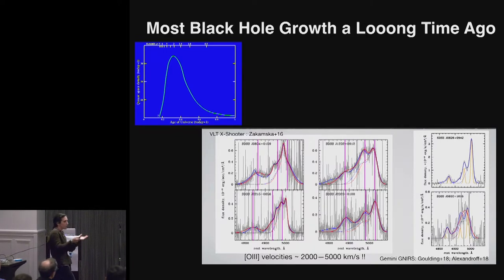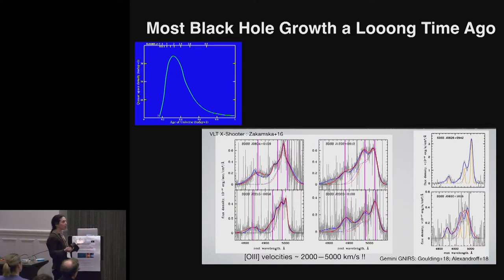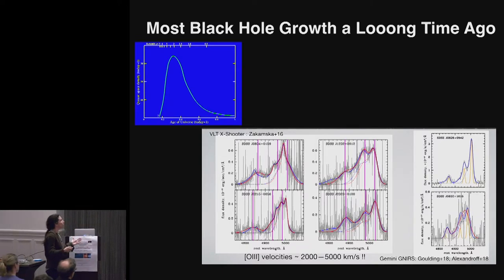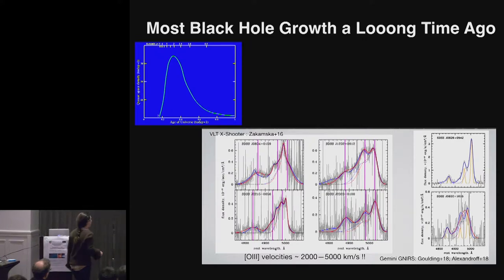These gas lines are moving at 2,000 to 5,000 kilometers per second. For reference, the typical velocity dispersion of stars in a galaxy, we're talking about a couple hundred kilometers per second. So this gas is in no way bound to the black hole. And these are systems that we think are driving just absolutely spectacular outflows.